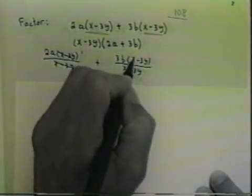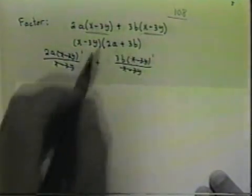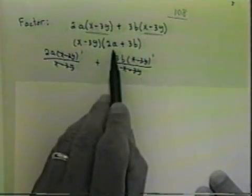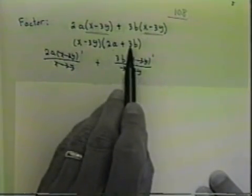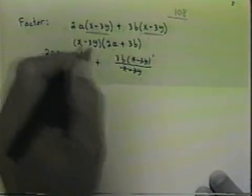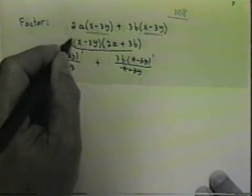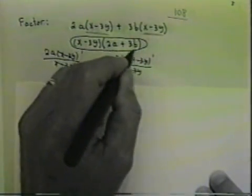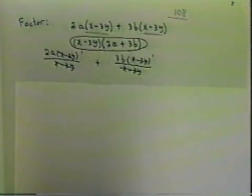2a times 1 is 2a. 3b times 1 is 3b. So the answer is x minus 3y times 2a plus 3b.